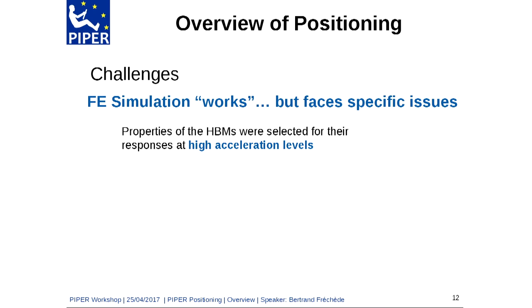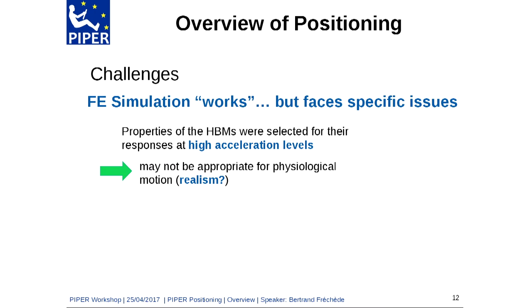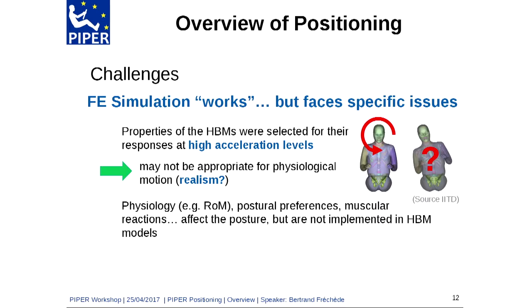Additionally, the properties of HBMs were selected for their responses at high acceleration levels. They may not be appropriate for physiological motion — we are really talking about 1g simulations. If you try to apply boundary conditions inducing lateral bending to a female model, for example, it is going to be very difficult to control the global behavior.